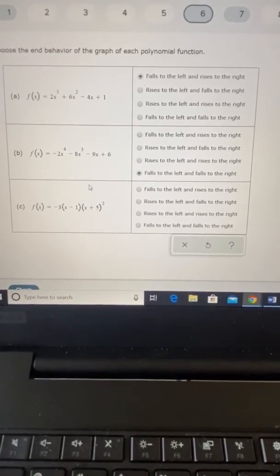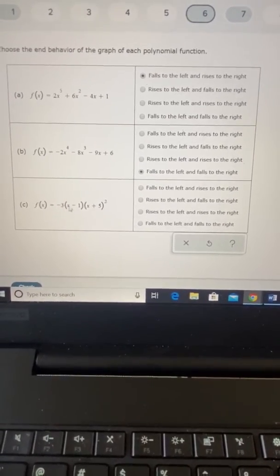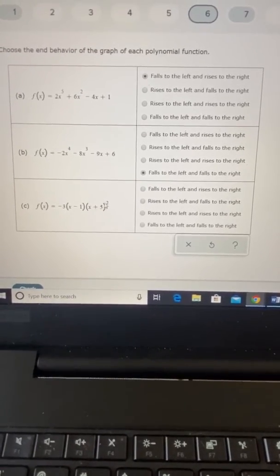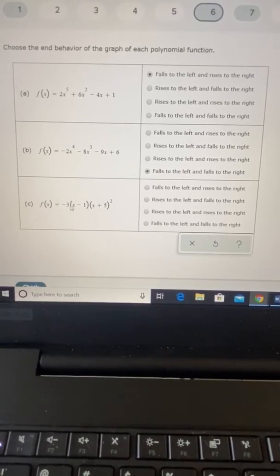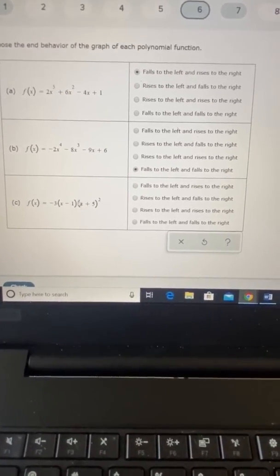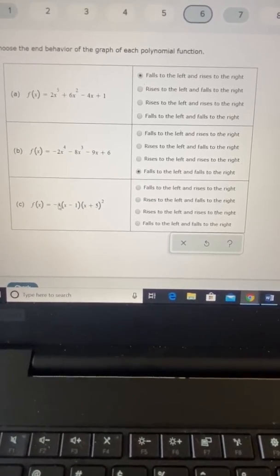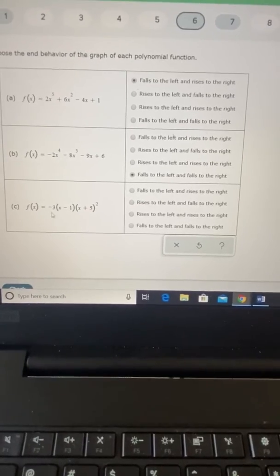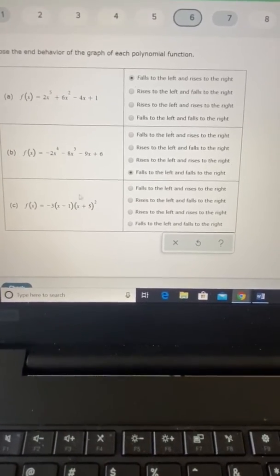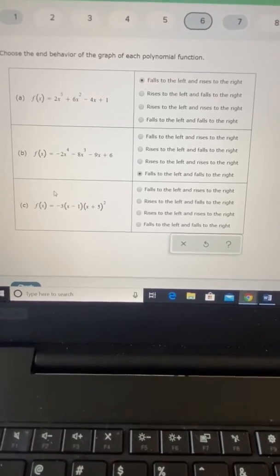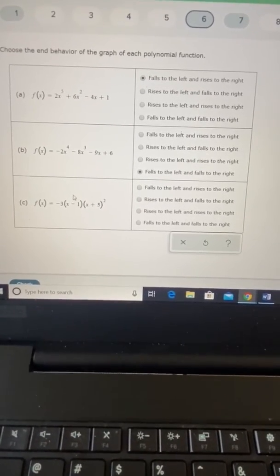Then we will want to look at the signs on the largest degree term of each parentheses. So outside here, we have a negative 3. Here we have a coefficient of 1 on the x. And here we have a coefficient of 1 on the x. So we'll do negative 3 times 1 times 1. That gives us our leading coefficient of negative 3. So we don't know what any of the other stuff is when we put this into descending order. But we do know that that first term is going to be negative 3x cubed.